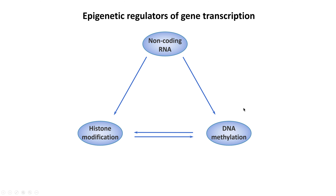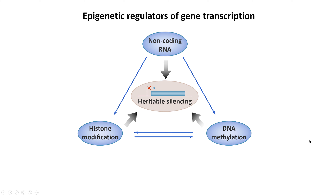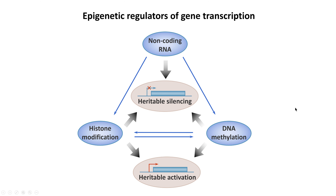There are three main molecular contributors to epigenetic regulation: modifications of the histone proteins involved in packaging DNA, which I shall focus on mostly in this lecture; the methylation of the DNA template itself; and non-coding RNAs, which can influence both histone and DNA modification. These contribute either to heritable silencing of a specific gene target, or to heritable activation states of genes to favour their expression in a given tissue.